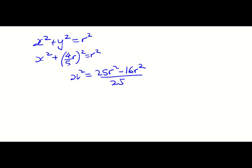We've got x² + y² = r². So x² + (4r/5)² = r². x² = r² - 16r²/25, which is (25r² - 16r²)/25 = 9r²/25. So x² = 9r²/25.